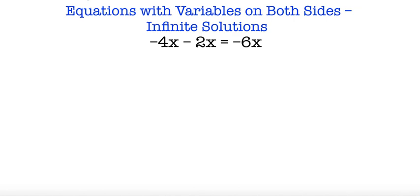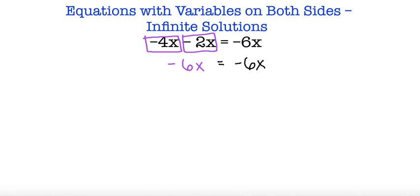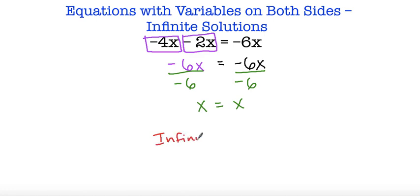Same thing here. First thing we should do is combine our like terms. I have negative 4x and negative 2x on the left side. Negative 4x minus 2x is negative 6x, and negative 6x is equal to negative 6x. In order to get x by itself I divide both sides by negative 6, and I end up with x is equal to x — meaning infinite solutions.